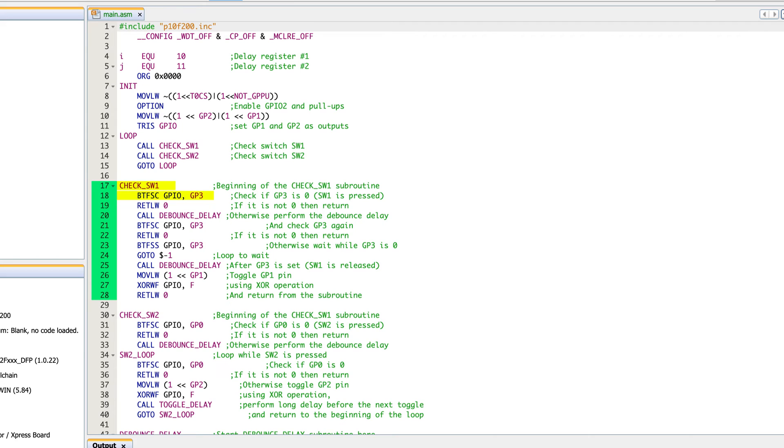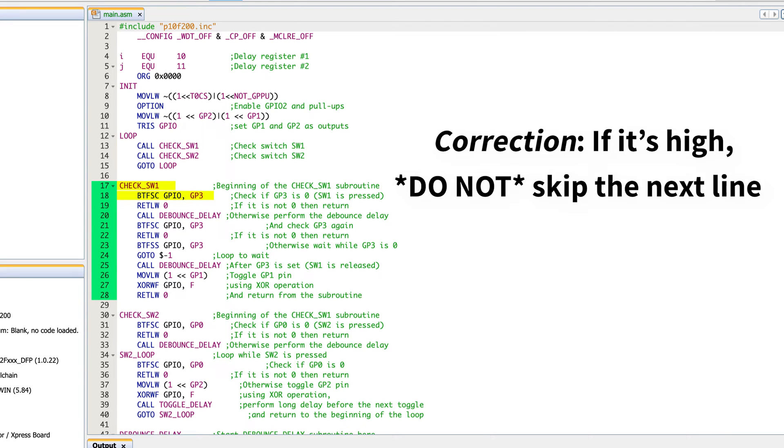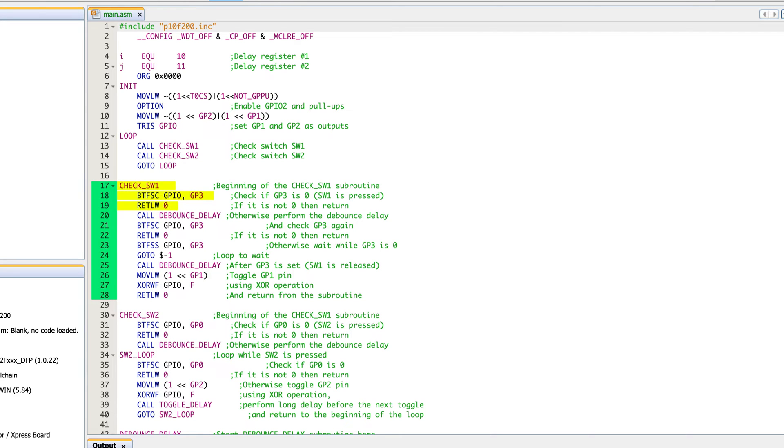That next line is that return literal W where it takes the value from the stack and puts it back into the program counter to jump you back into the main program. So what that's saying is, if this is high, then that means it's doing what it's supposed to be doing.